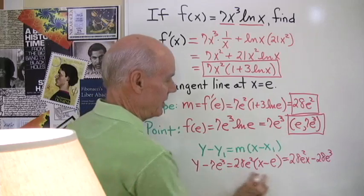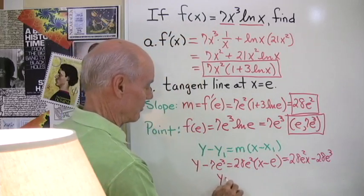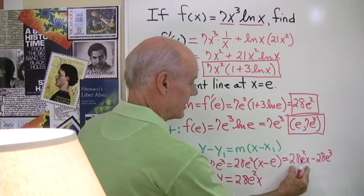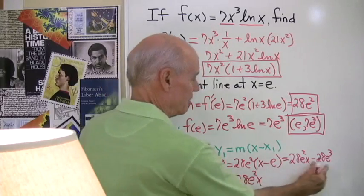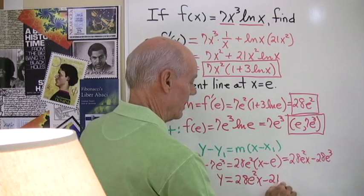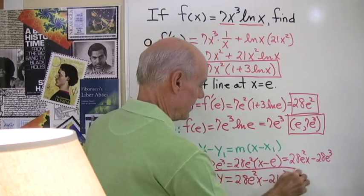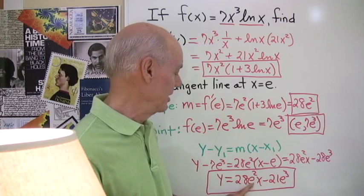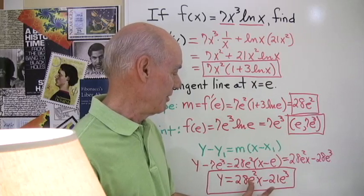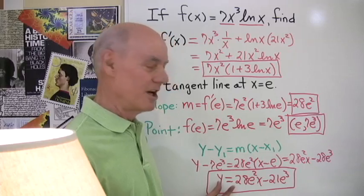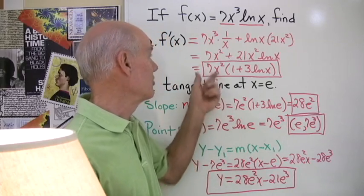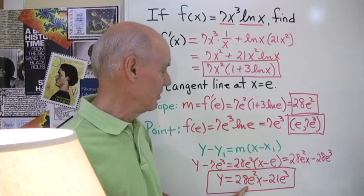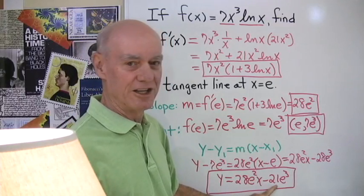So if I add 7e³ to both sides my equation is going to look like this. y = 28e²x. That's this right here. And then when I add 7e³ to both sides I'm going to have minus 21e³ right here. So I can get a decimal approximation to this if I want by just using my calculator and putting in a value for e right here and multiplying this out. But in any case this is the equation of the line tangent to this curve at the point x equal e. This is the slope of the line 28e² and this is the y-intercept minus 21e to the third.